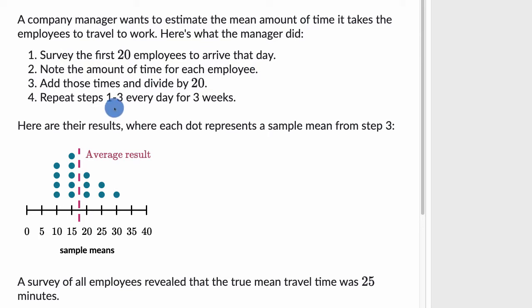And then last but not least, repeat steps one to three every day for three weeks. Here are their results where each dot represents a sample mean from step three. A survey of all employees revealed the true mean travel time was 25 minutes.